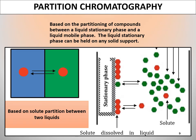In partition chromatography, the components are partitioned between a liquid stationary phase and a liquid mobile phase. The liquid surface is coated on the solid surface making it a stationary phase, and the mobile phase moves through the stationary phase and the components get separated. Paper chromatography and high-performance TLC also work on the same principle.